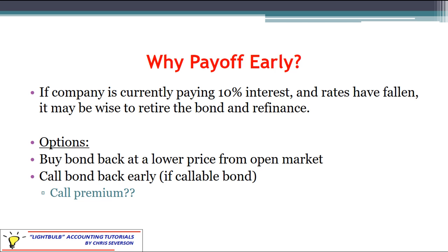Not all bonds can be bought back early. If it's a callable bond, the company can force the investor to sell it back. If it's not callable, the only other way to pay it off early is to go out to the open market and buy it back for whatever the current price is. Keep in mind, if rates are currently 5% and you have a 10% bond, that bond price is probably going to be fairly high because it's a good investment. So generally, we're talking about a callable bond where the company can force the buyback.